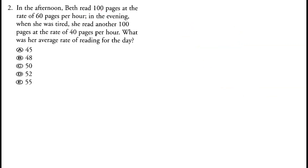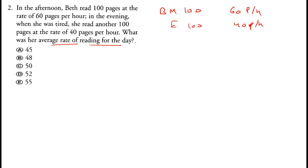Question two: In the morning Beth read 100 pages at 60 pages per hour. In the evening when she was tired she read another 100 pages at a slower speed of 40 pages per hour. We need to find her average rate of reading for the day. Average rate equals total number of pages divided by total time. The total pages she read equals 200.